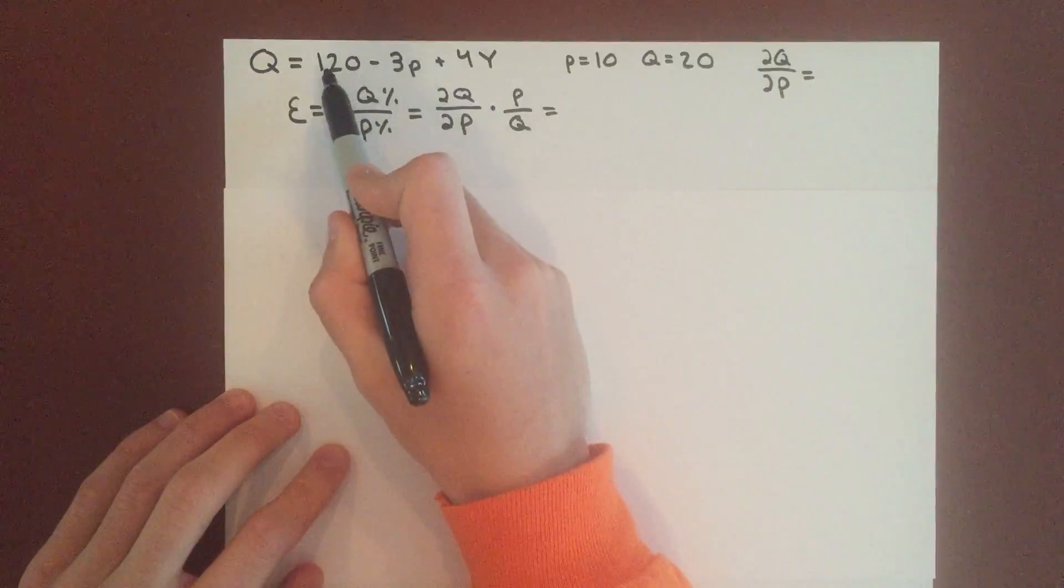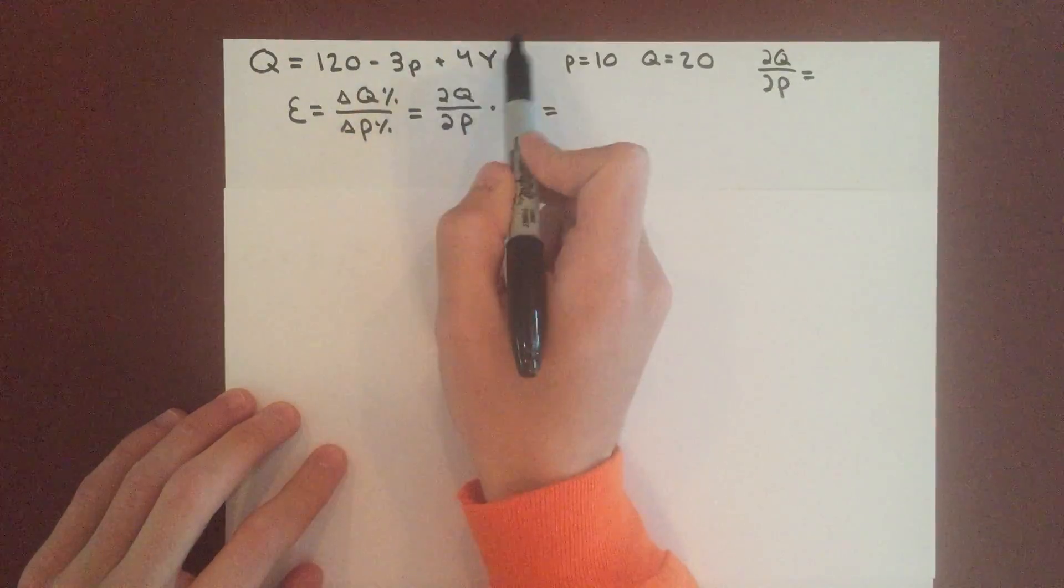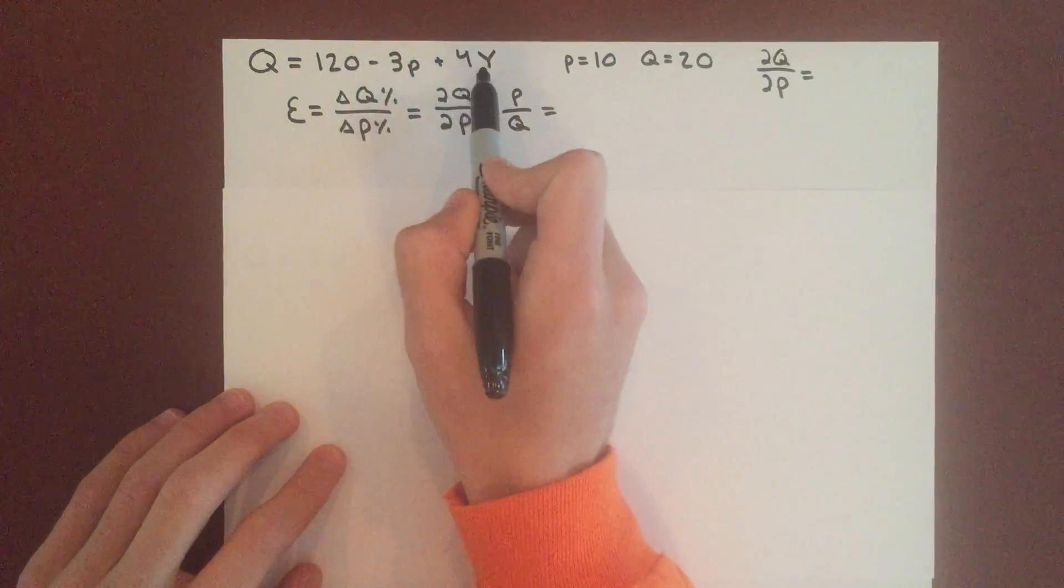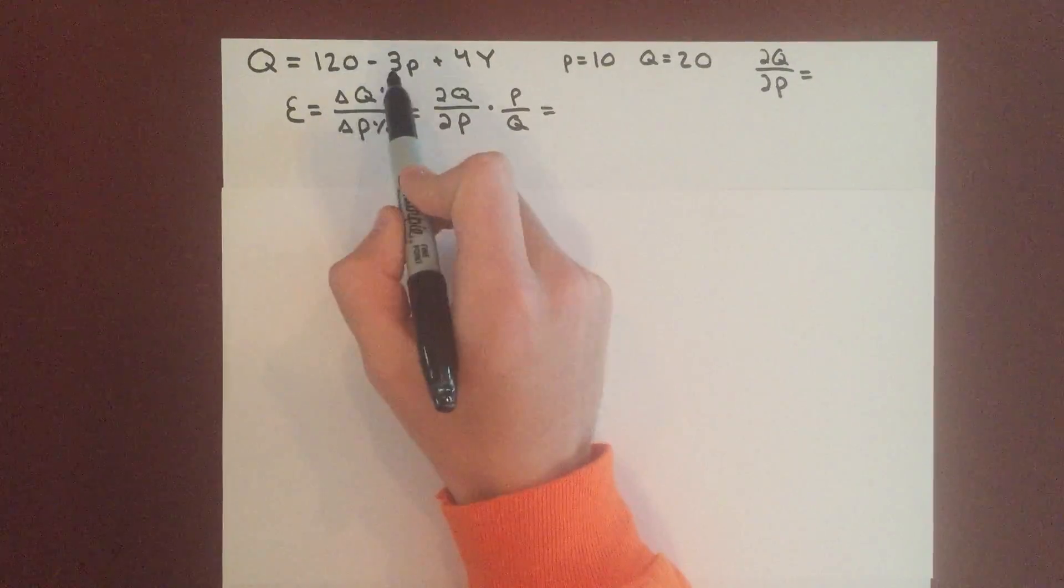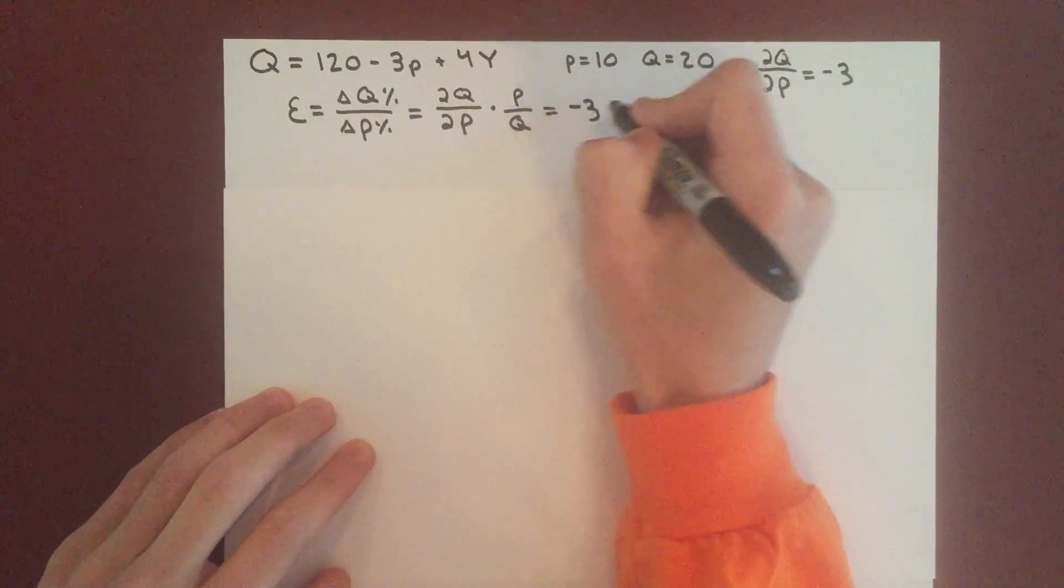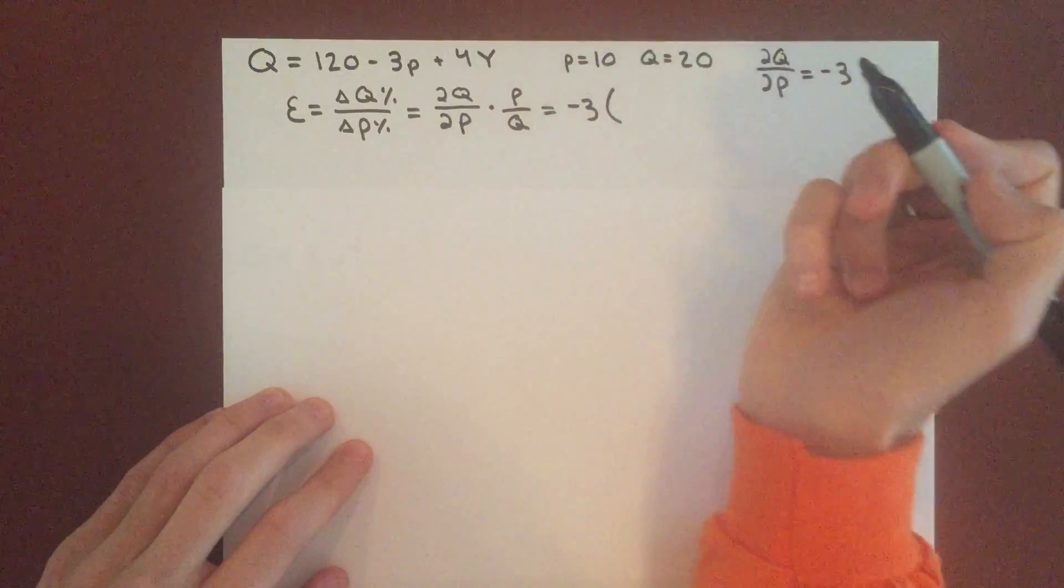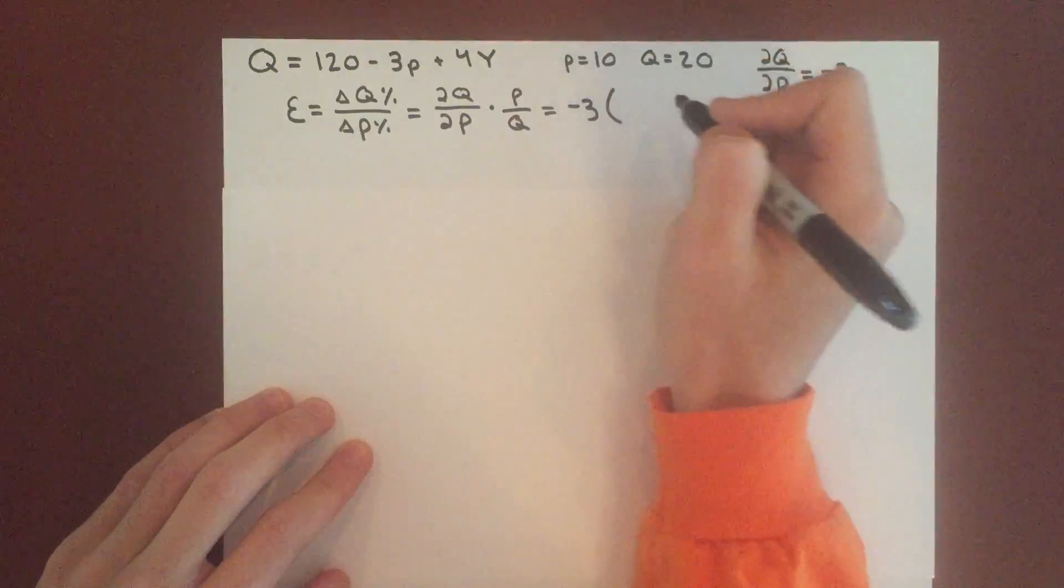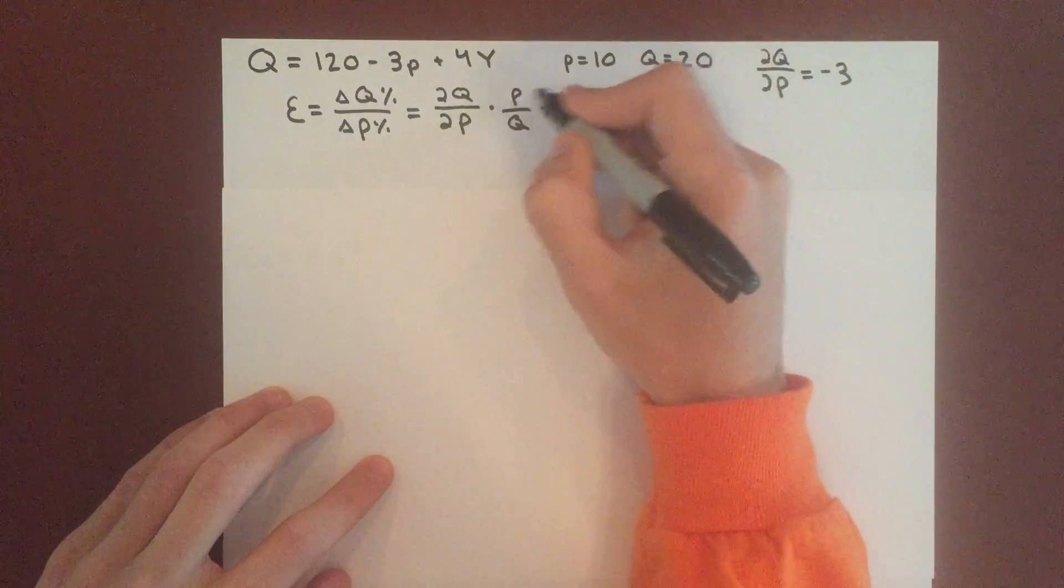constant. So derivative of any constant is 0, and that's 120 and 4Y. So this partial derivative will just be equal to negative 3. And then this price and quantity are given in the information, so we can take the